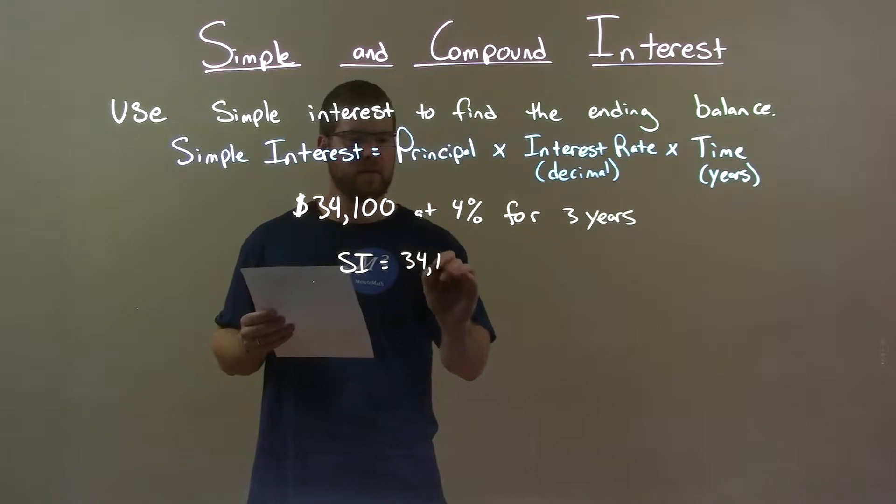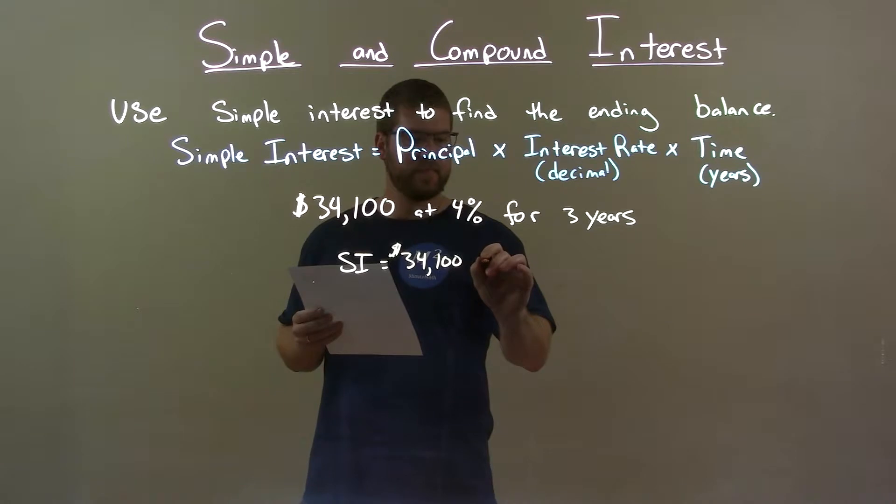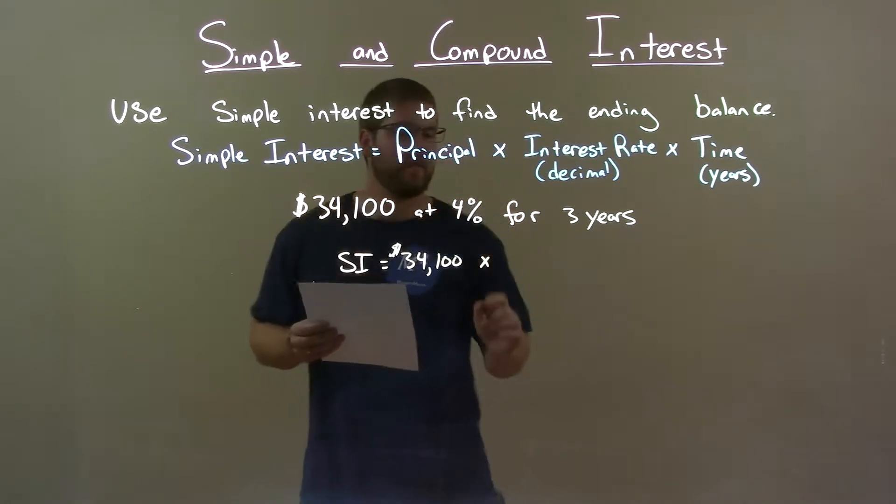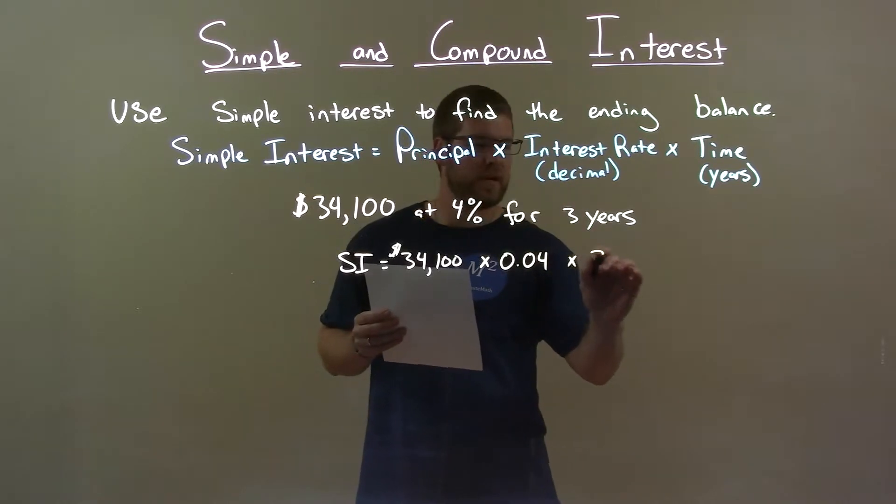$34,100, multiplied by 4% as a decimal, 0.04, and then our time is 3 years.